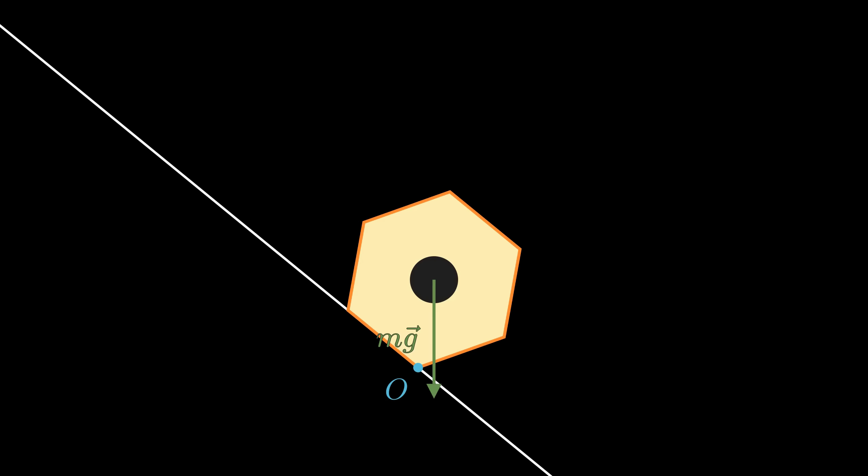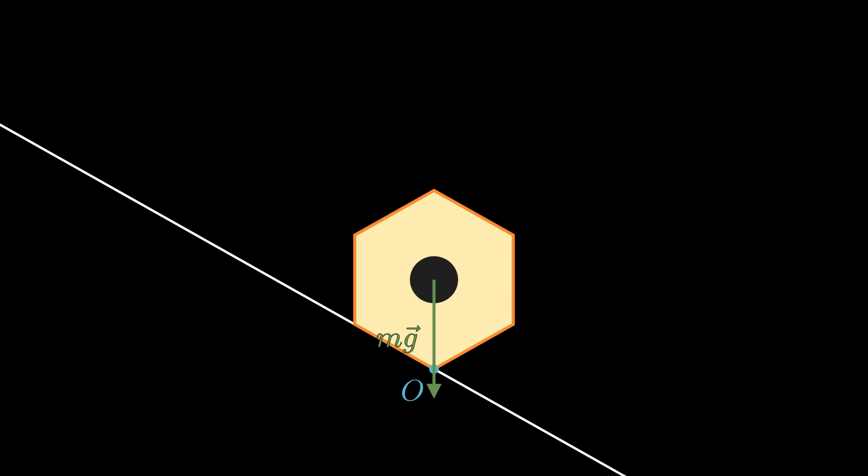Let's go back one step. When the force of gravity is pulling down exactly from on top of the axis of rotation, that's the last point the object is stable. If the inclination is slightly more than this, there's going to be a torque which will turn the pencil and it starts rolling. With some geometry, we can easily find that this angle is actually 30 degrees. So if we don't touch the pencil, 30 degrees is the largest angle at which the pencil is stable on its own.